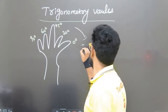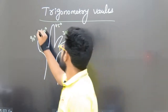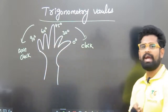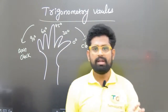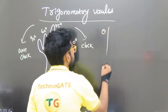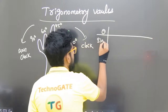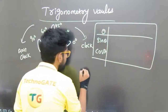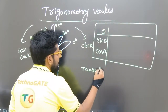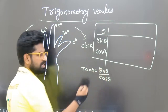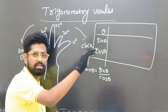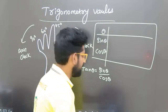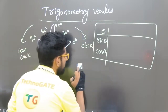We have two directions: one is clockwise direction, another one is anticlockwise direction. We need to write the values for sin theta and cos theta. These two are important. For tan theta, just write sin theta by cos theta. For cot theta, cos by sin. For cosecant, 1 by sin; for secant, 1 by cos. So our main focus is on sin and cos only.